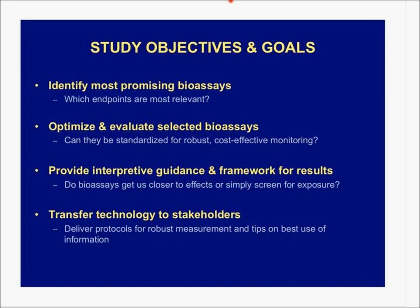Our objectives and goals were to identify promising bioassays and what endpoints to use — we tried to pick endpoints relevant to monitoring lists already coming out. We were going to optimize those through a round-robin system where each lab in the collaborating group would take on a bioassay, optimize it, and then do blind round-robin testing to check QAQC, ease of use, and robustness. Our goal is also to eventually provide interpretive guidance — what do these results actually tell you? Can they be used to get an effect threshold for regulatory or risk-based purposes?